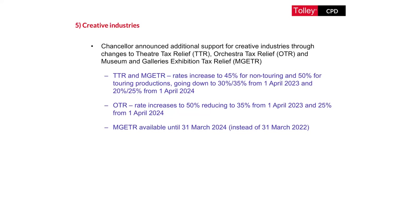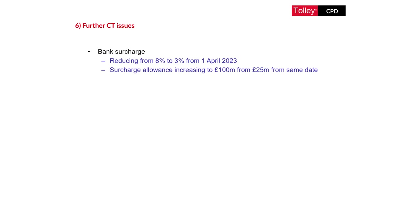Museum and Galleries Exhibition Tax Relief is to be extended to the 31st of March 2024, rather than being abolished from 2022 as was intended. There is also a technical change to Film Tax Relief so that from the 1st of April 2022, film productions which initially qualify for Film Tax Relief but then change intention during production to meet the criteria for High-End Television Tax Relief will be able to continue claiming Film Tax Relief. The Bank Surcharge is reducing from eight percent to three percent, with the surcharge allowance going up from 25 million pounds to 100 million pounds, both applying from the 1st of April 2023.